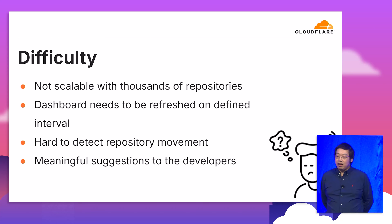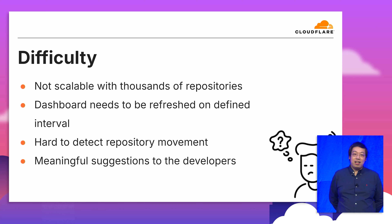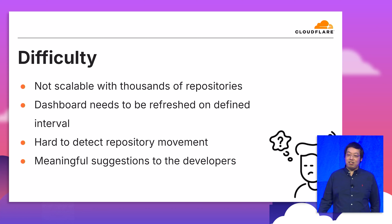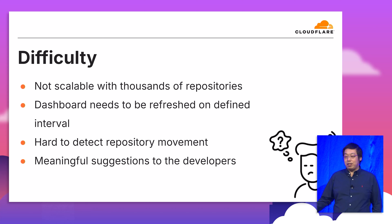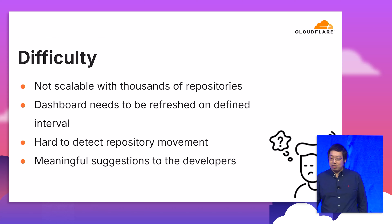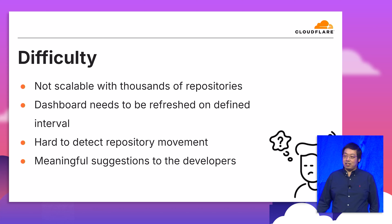There are some difficulties with this. We have thousands of repositories in our code repository, and it's really hard to check every repository one by one with a large instance. That will be really slow and not reliable because you only have one machine. We also need to make sure that when users fix a problem, they can see the updated scores in their dashboard, and the architecture is scalable and resilient to all failures.